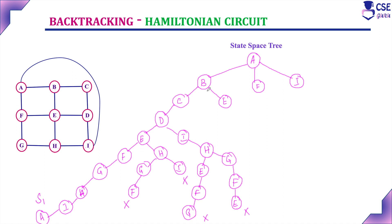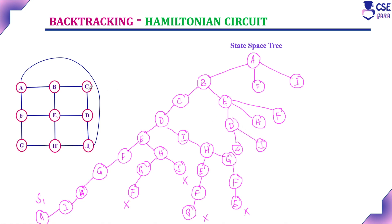Backtrack to the previous step and consider the possibility through E. From E, the vertices connected are B, D, H, and F; B is already visited. So from E, D, H, and F are unvisited. Checking the path through D, you can visit unvisited vertices C and I. But from C, the adjacent vertices are B and D, both already visited — you cannot reach any unvisited vertex after C. So this is a dead end.